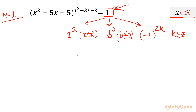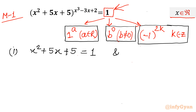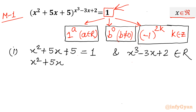Beginning with Case 1: base equals 1 raised to the power a. We set x squared plus 5x plus 5 equal to 1, and confirm that the power x cubed minus 3x plus 2 belongs to real numbers — which it always does. Moving 1 to the left gives us x squared plus 5x plus 4 equal to 0. We solve this quadratic by factorization.